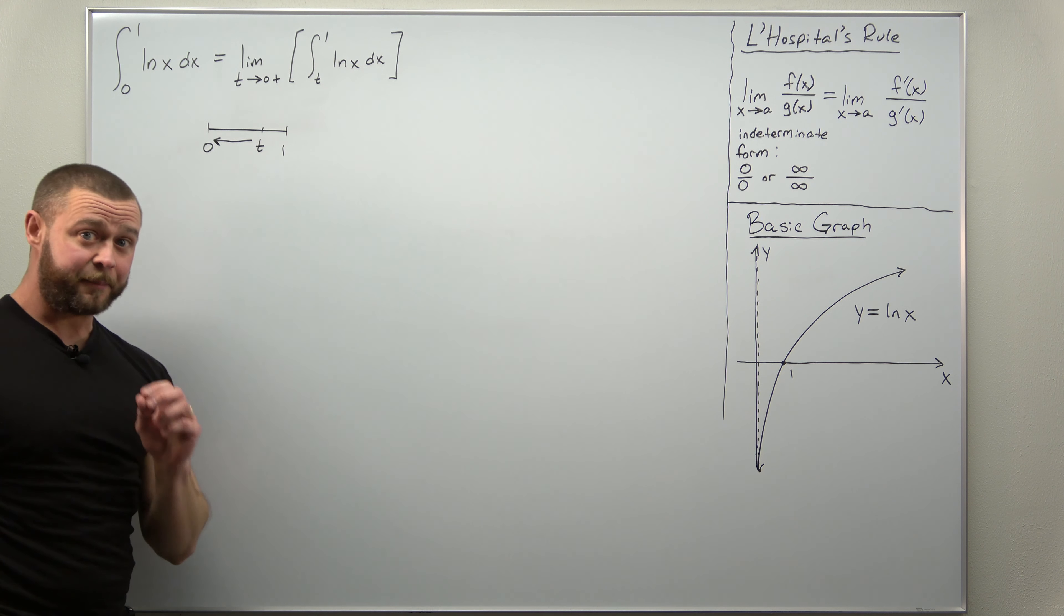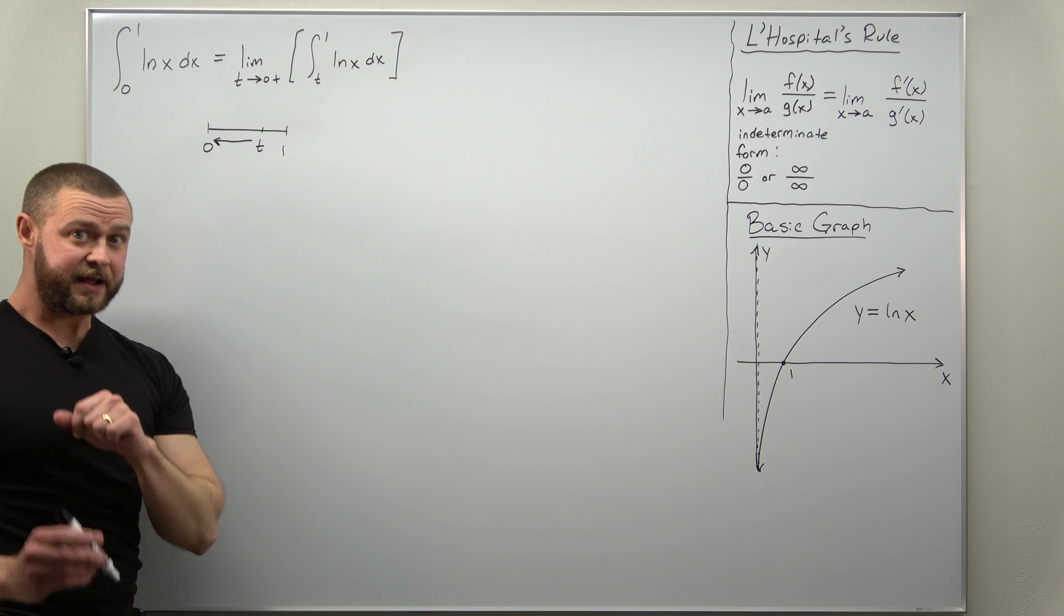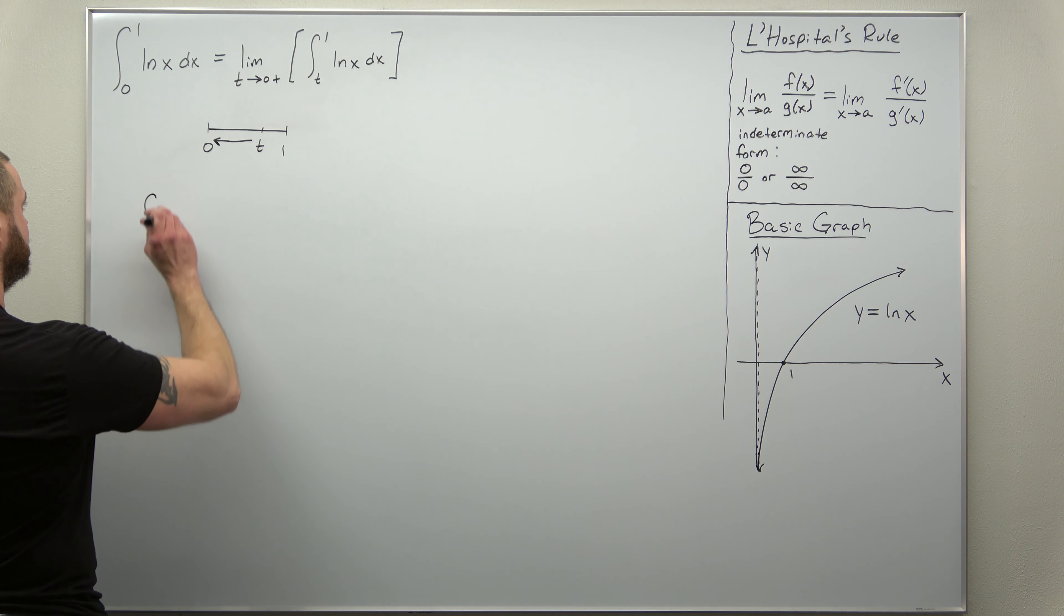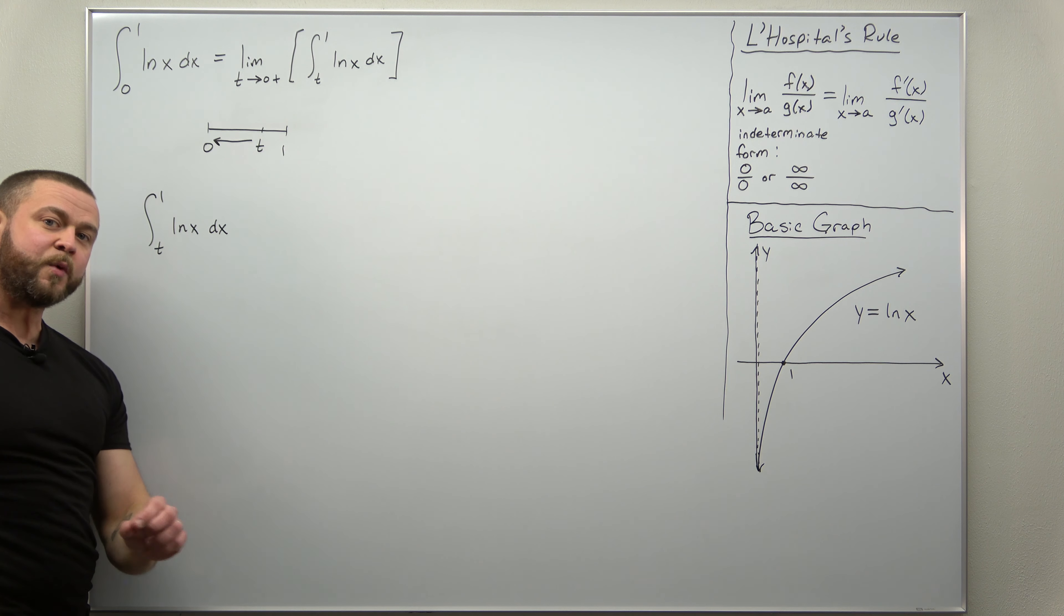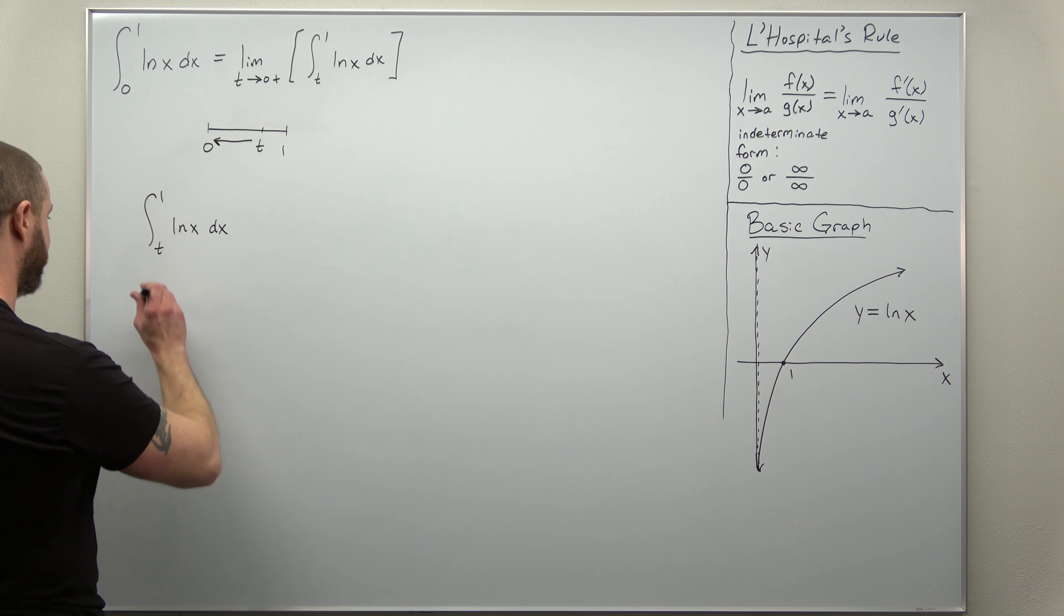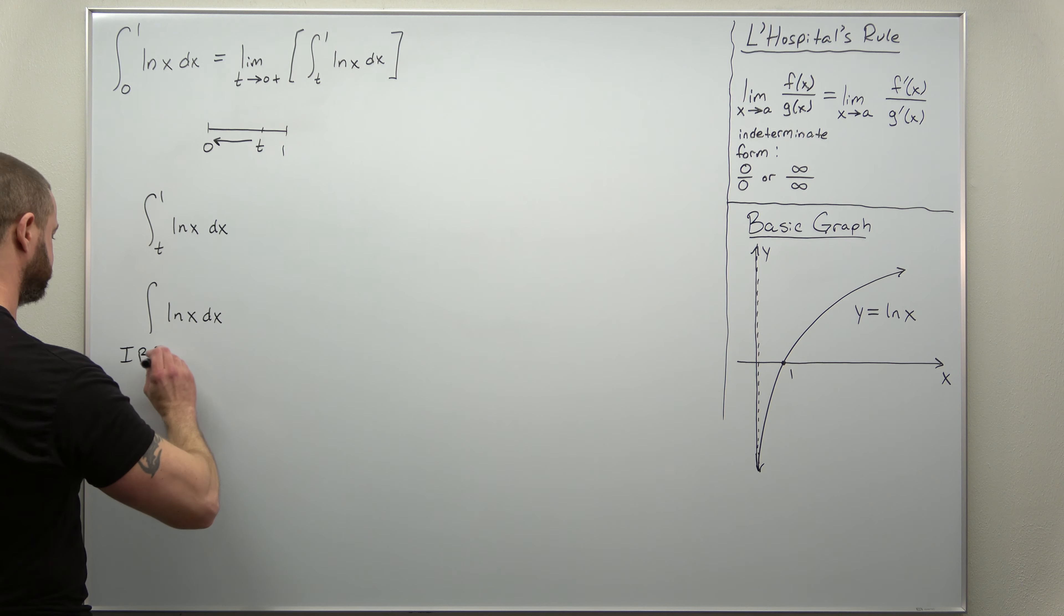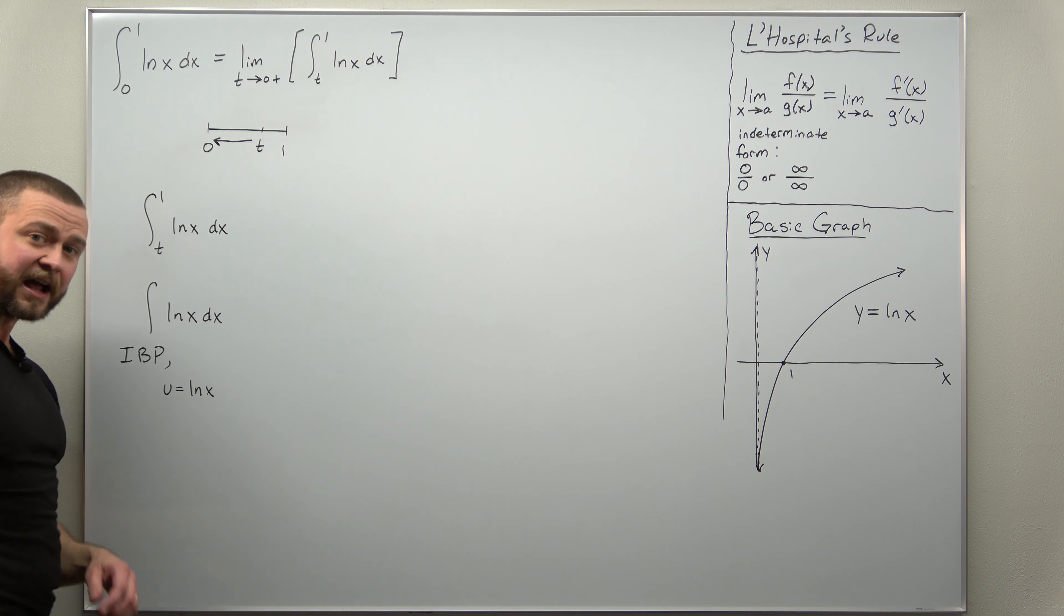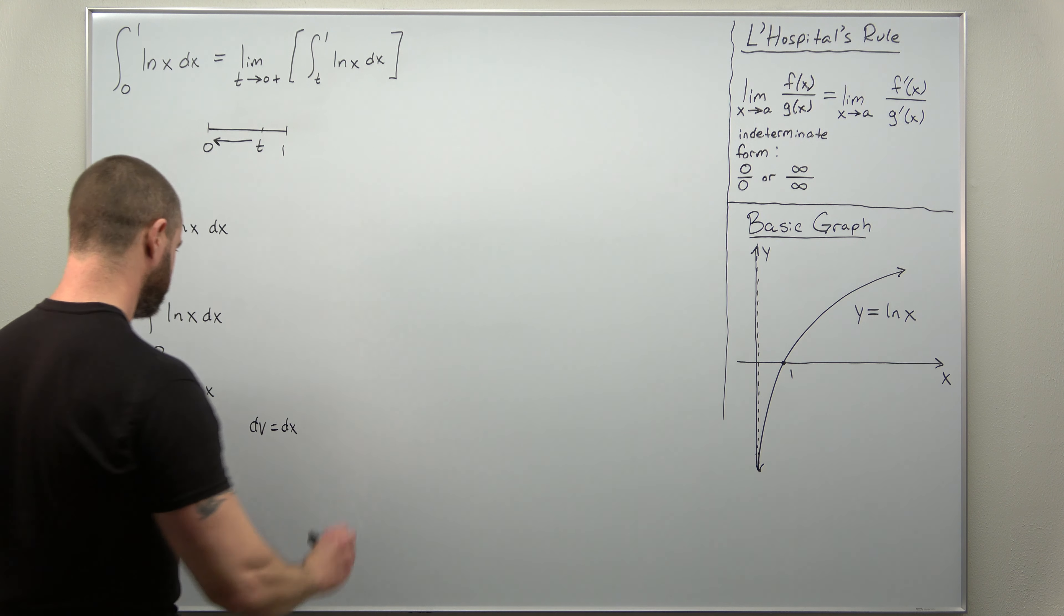Now that we have our integral set up as a limit, we can evaluate first the integral and then take a limit. So let's do the integral first, and this we can do with a basic standard integration by parts. So let's focus first on the antiderivative. So for integration by parts, we're going to choose here u as natural log of x and dv as dx.